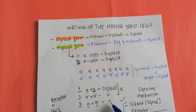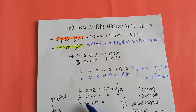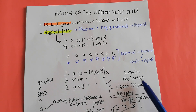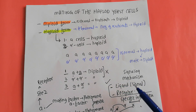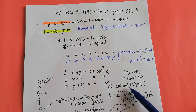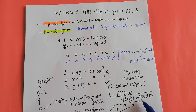What is the reason that an A cell cannot interact with another A cell, or an alpha cell cannot interact with another alpha cell? Looking at signaling mechanisms, the general rule is that there will be a ligand — also called a signal — and there will be a receptor. A specific ligand can only interact with a specific receptor, so there is a specific interaction of specific ligands to specific receptors.